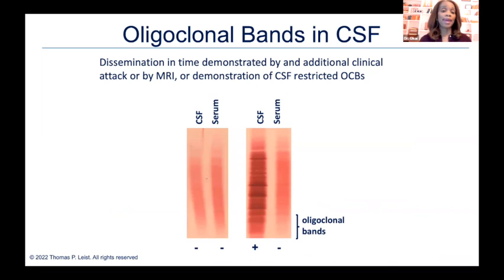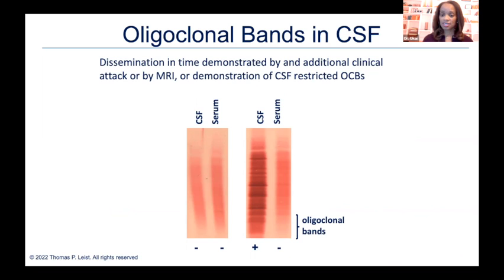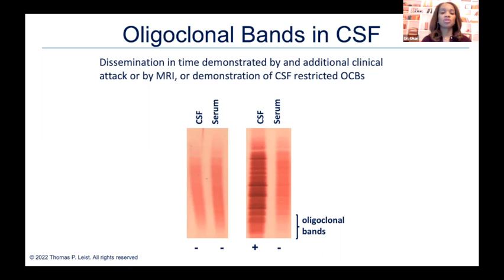For the spinal tap, we look for oligoclonal bands — proteins that we see in the spinal fluid. If the MRI isn't giving us the full diagnosis we'd like to see, we can use this as an additional test. We take the fluid and put it on a gel, and in a normal state, what we see in the spinal fluid should be the same as what we see in the blood. But in an MS patient or other inflammatory conditions, that may be different — we may see more oligoclonal bands in the spinal fluid than in the blood. That is a positive spinal tap.